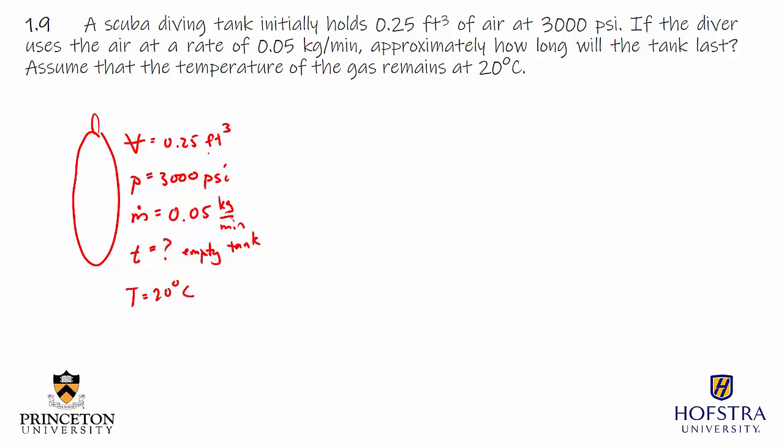The first thing I notice is that I have some mixed units here. I have the volume in feet cubed. I have the mass flow rate in kilograms per minute. So we have both the international system and the British gravitational system. I'm going to have to convert some of these over so I have consistent units, and I like to work in the international system. So I'm going to convert the volume. There's 0.304 meters per foot and I'll just have to cube that. And that will leave me with 0.0071 meters cubed.